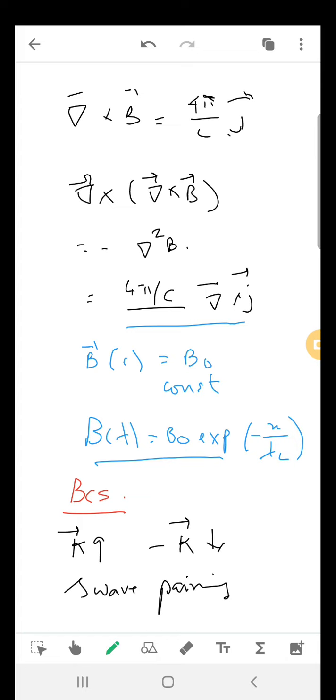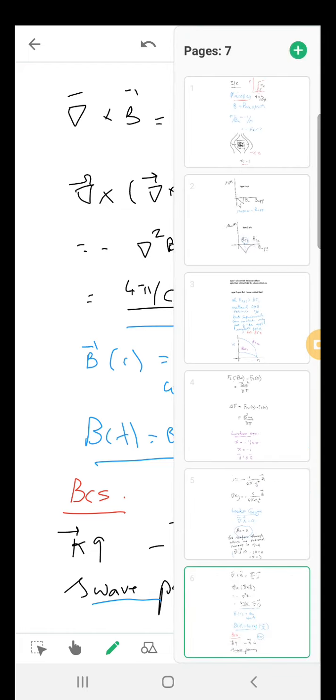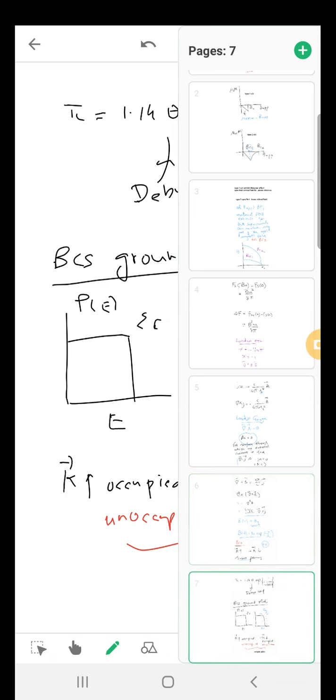The reason for superconductivity is the formation of a Cooper pair—two electrons come together and move together, called S-wave pairing. We consider two electrons, one in k-up state and minus k in the down state, and pairing takes place.